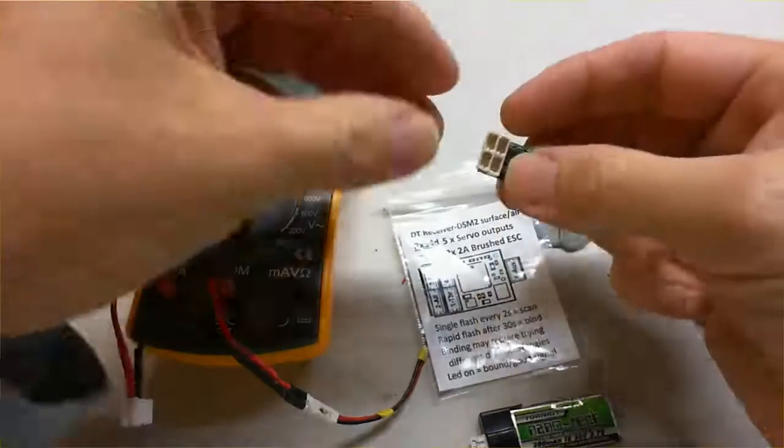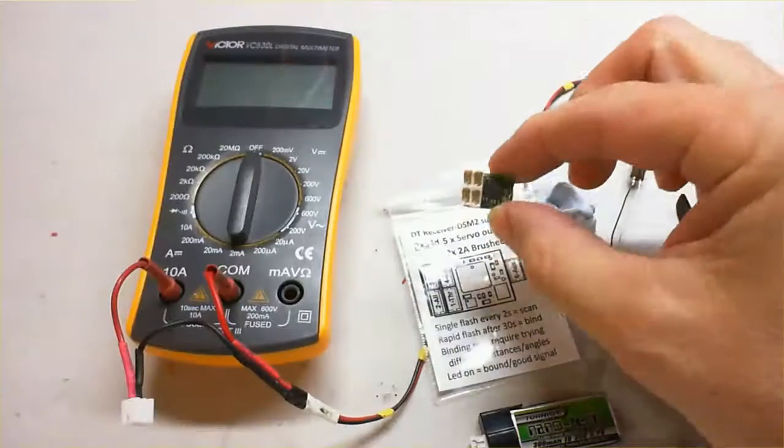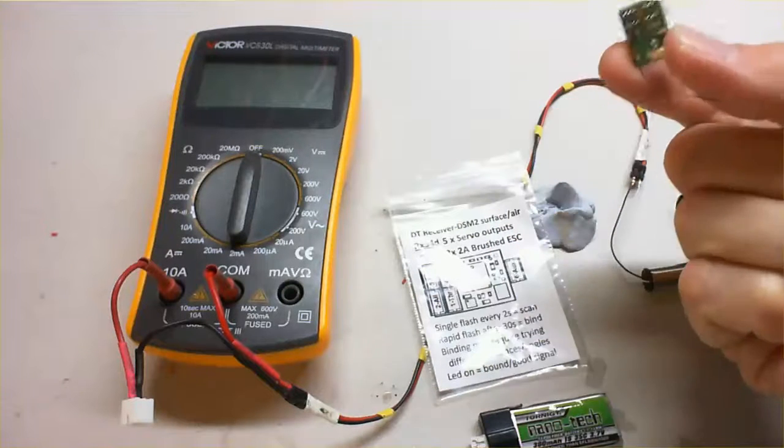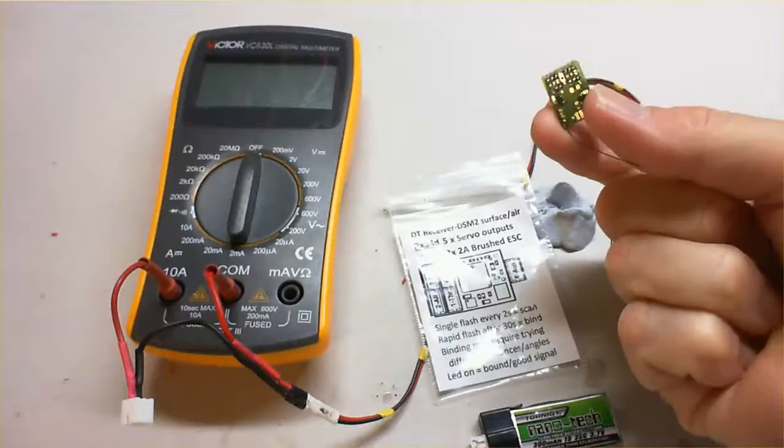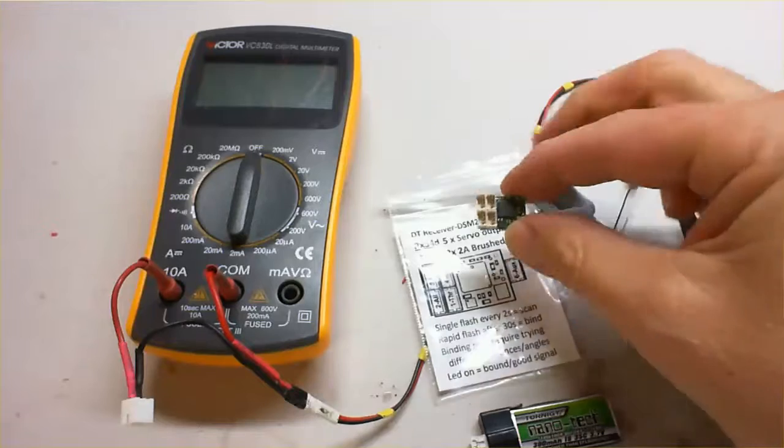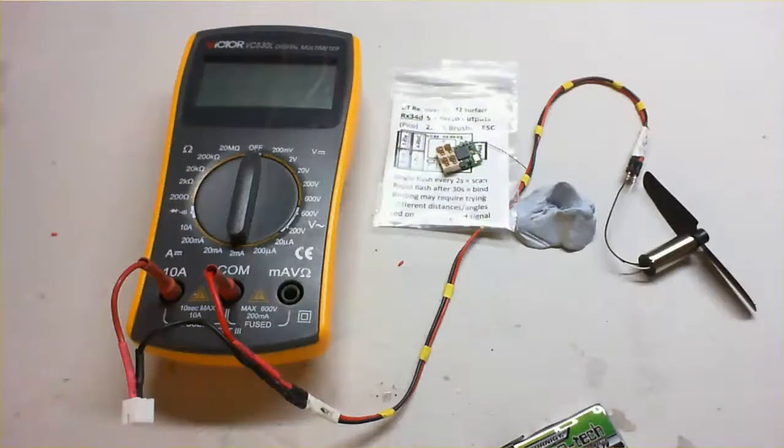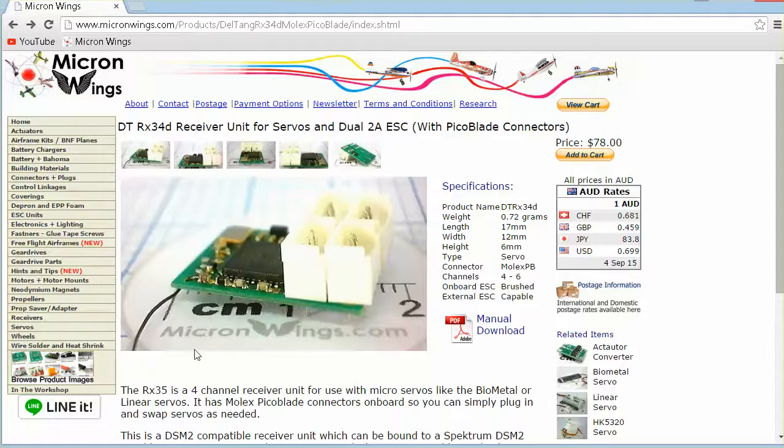So we're just going to have a look at amp draw. Many of the receivers that you have these days, especially the Deltang units like this, actually have brushed ESCs on board, and they've all got an amp rating. This one happens to be 2 amps, that's a DT-RX34.